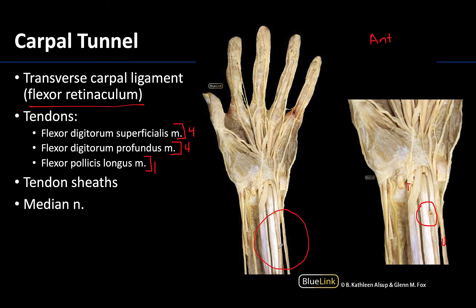Not visible here are tendon sheaths, which are elongated bursae that surround the tendons. They often give the tendons a very glistening appearance but are very delicate and often removed during any form of dissection. As you know from the carpal tunnel learning objective, these tendon sheaths are very important in regards to carpal tunnel syndrome — they often become inflamed, and that's what often will cause compression of the one last thing we need to identify, which is the median nerve.